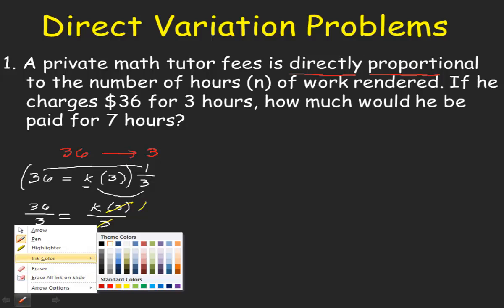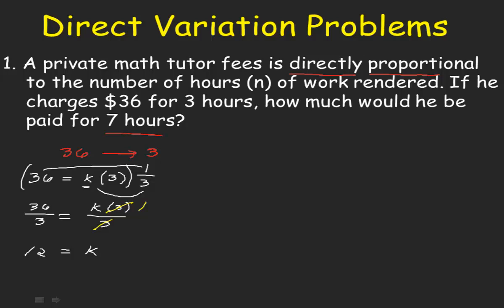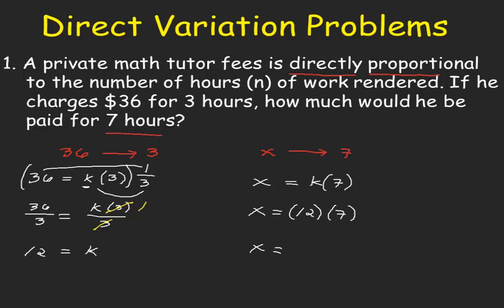How much would he be paid for 7 hours? So our given is 7 hours, and we are required to find the amount. Since we do not know the amount for 7 hours, let us represent that as x. So x is to 7 hours. Our direct variation equation will be x is equal to k multiplied by 7. We know that k is 12. So 12 times 7 gives us $84. So x equals $84, which is the amount for 7 hours.